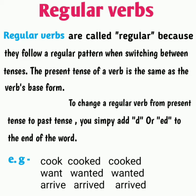जो present tense होता है, वो ही आपकी base form होती है. तो यानि कि जो present tense और base form है, वो दोनों एक ही चीज होती है. जब भी आप एक regular verb को present tense से past tense convert करोगे, तब आप उस word के end में या तो d या फिर ed को add कर दोगे.